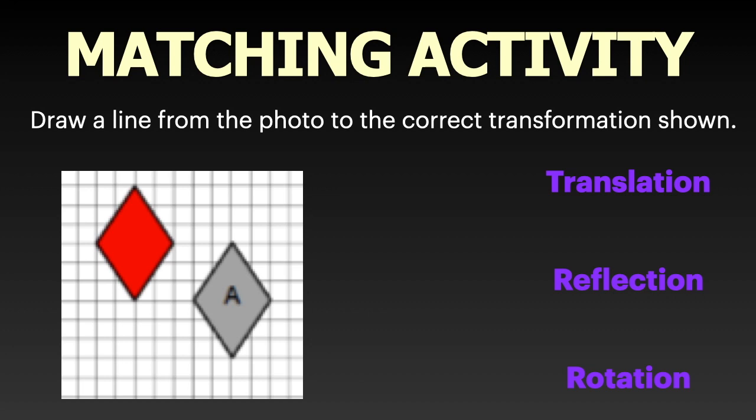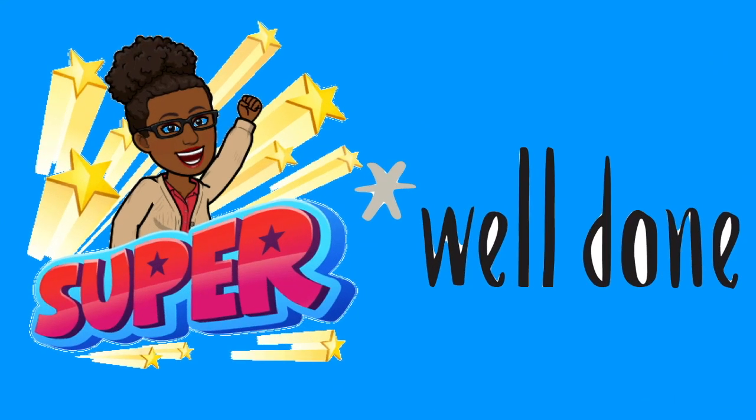What transformation is shown? What did they do to get from figure A to the colored figure — did they translate, slide, reflect, flip, or rotate, turn? If you said translate, you are correct! You did a super job. Well done!